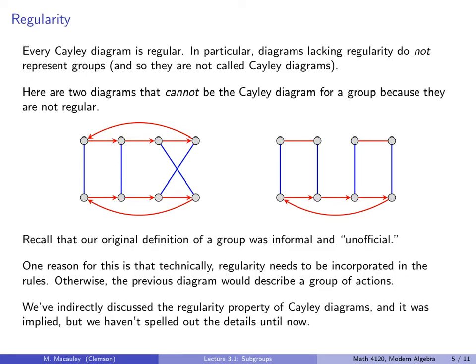Now, let's recall that our original definition of a group was informal and unofficial. And one reason for this, really the primary reason, is that technically, regularity needs to be incorporated in the rules. And it wasn't incorporated in any of the four rules. Otherwise, these diagrams would represent a group of actions. So we've indirectly discussed the regularity property of Cayley diagrams, and it was implied. But we have not spelled out the details until now.